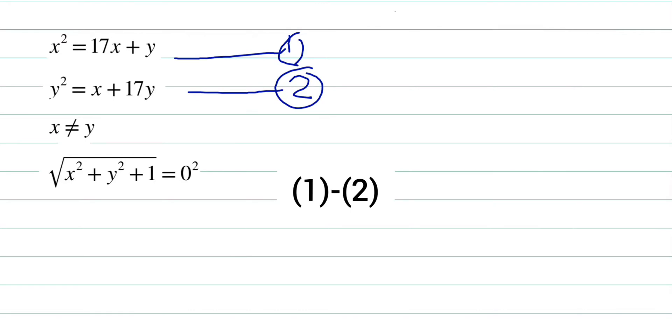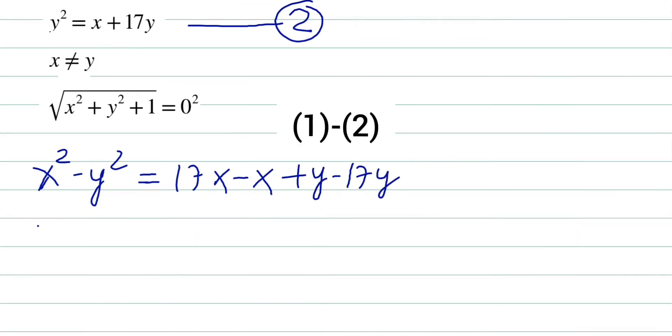You see here x² minus y² will be equals to 17x minus x plus y minus 17y, which after slight simplification becomes something like this: (x - y)(x + y) on this side, 16x minus 16y, and again (x - y)(x + y) equals 16.